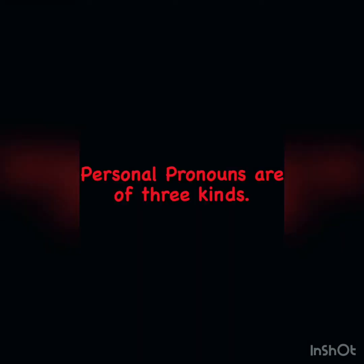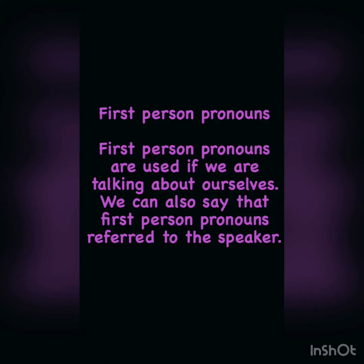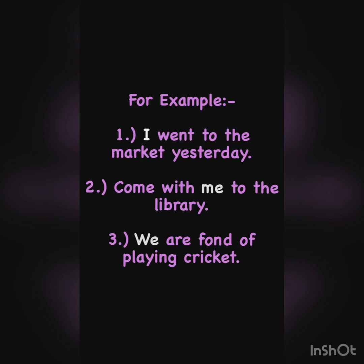Personal pronouns are of three kinds. The very first is first person pronouns. First person pronouns are used when we are talking about ourselves — they refer to the speaker. For example: 'I went to the market yesterday' — here 'I' is a first person pronoun because the speaker is talking about themselves. 'Come with me to the library' — 'me' refers to ourselves. 'We are fond of playing cricket' — 'we' is also a first person pronoun.